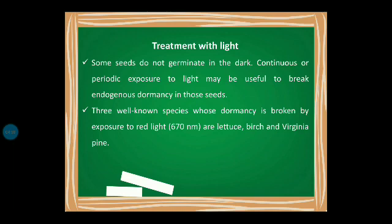There are three well-known species whose dormancy is broken by exposure to red light: lettuce, birch, and Virginia pine. The red light mechanism we have studied in earlier videos. If you want to understand it, you can watch the second part of the seed dormancy lecture.